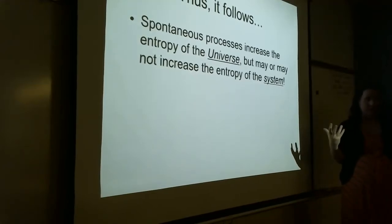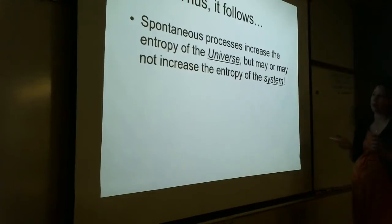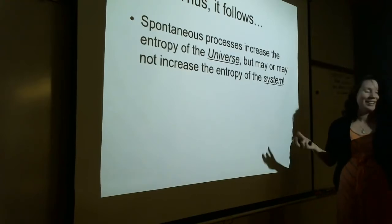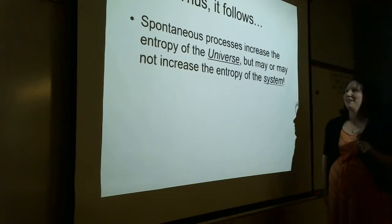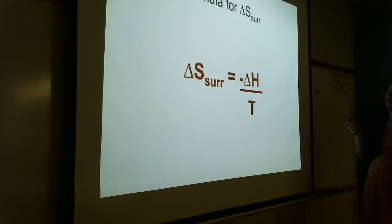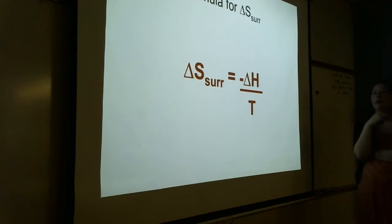Spontaneous processes increase the entropy of the universe, but they may not necessarily increase the entropy of your particular system. We have to look at both the surroundings and the system. We calculate the entropy change of the surroundings as negative delta H over T. So delta S of surroundings equals negative delta H divided by temperature in Kelvin.